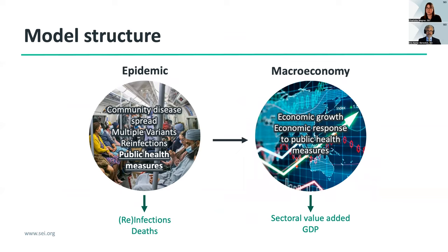The model consists of two major components that allow us to integrate the COVID pandemic and its public health measures with the macroeconomy. The epidemic component simulates community disease spread of COVID, includes multiple variants, allows simulation of reinfections and the response to public health measures, and outputs infections as well as deaths from COVID-19. The macroeconomic component simulates economic growth and the response of the economy to public health measures, generating sectoral value added as well as GDP. I'll hand it over to Eric to explain the linkages between those two components.